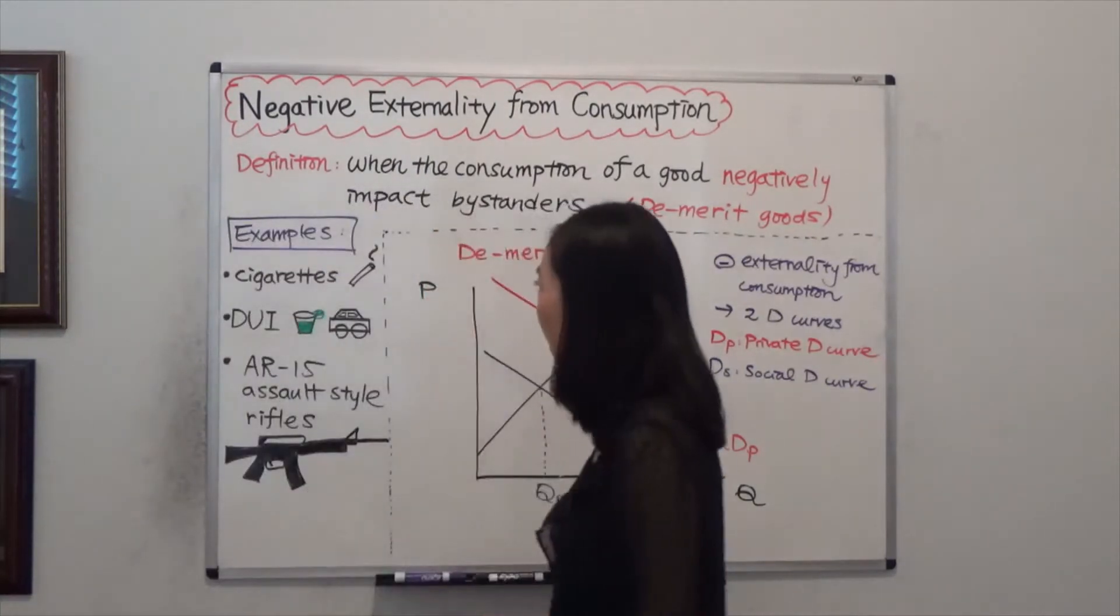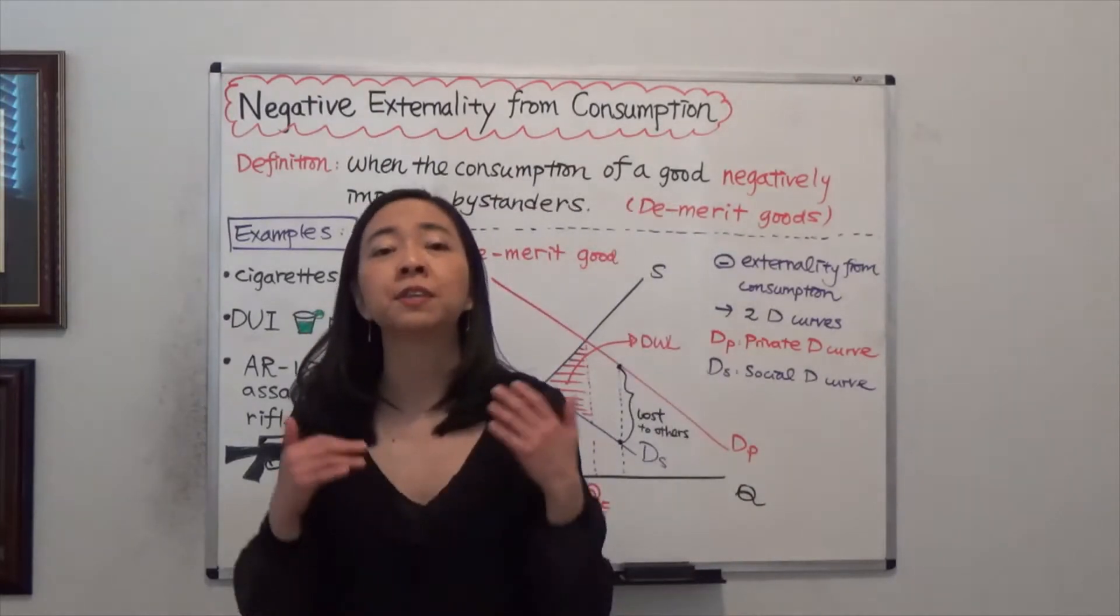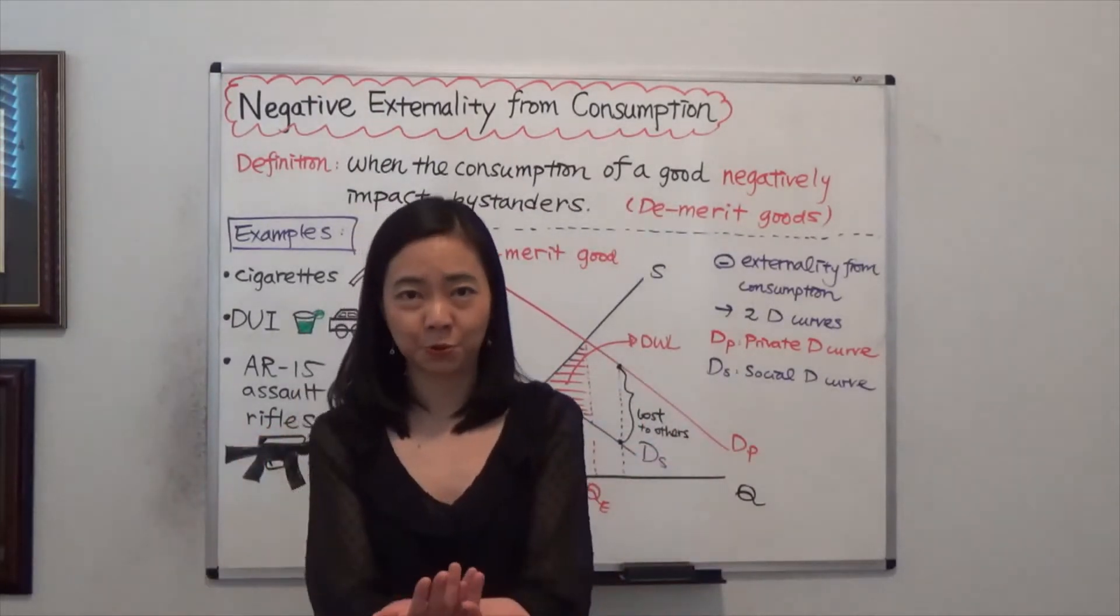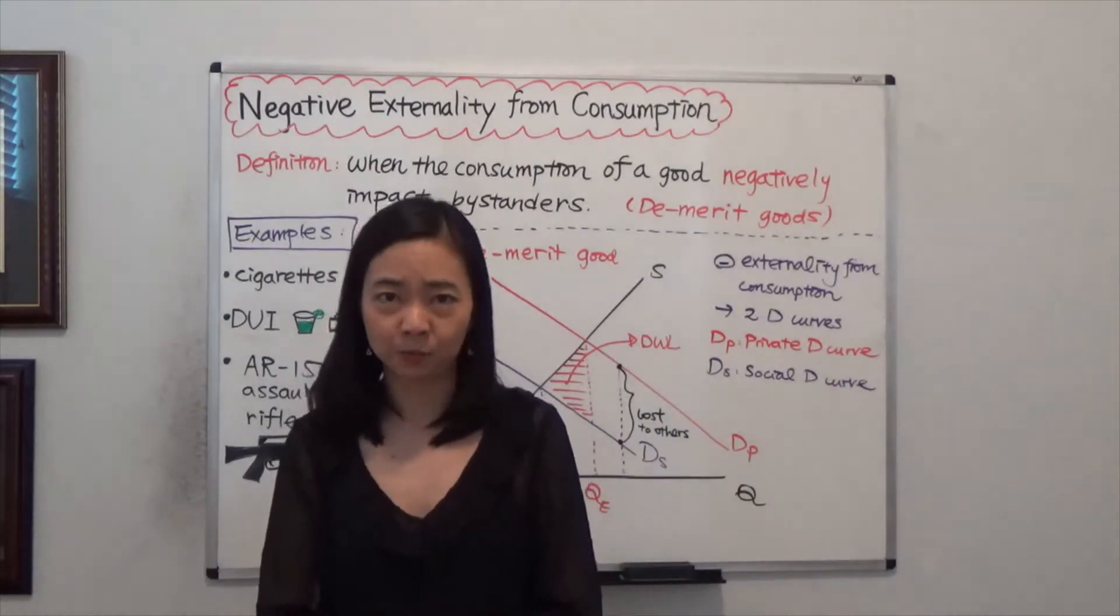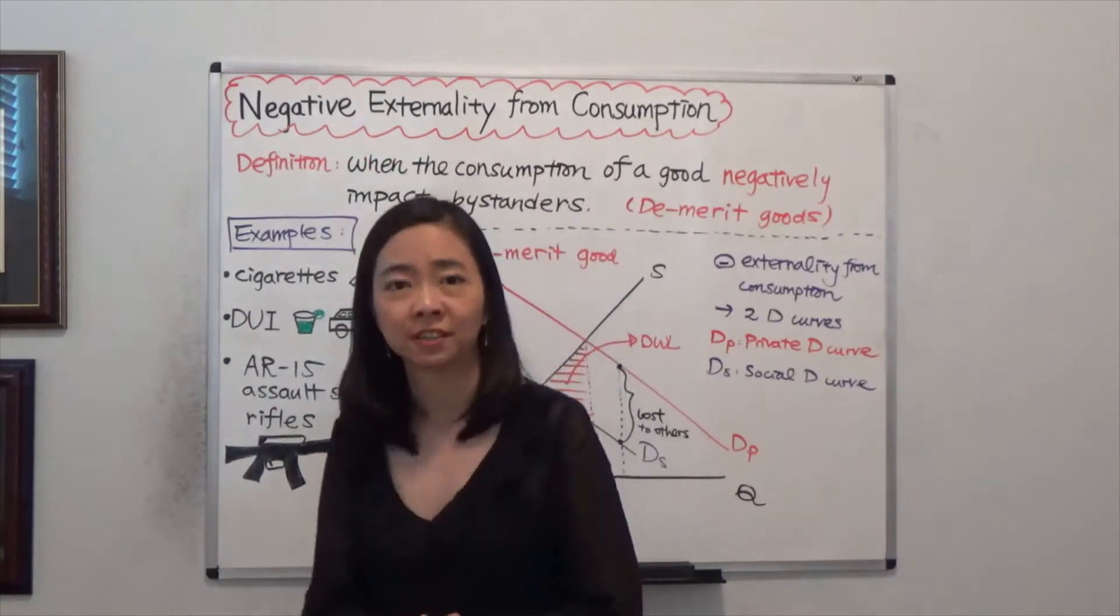Here are some examples. Cigarettes. When you smoke a cigarette, you negatively impact those around you because they will have to suffer your secondhand smoke. And that's an example of negative externality from consumption.